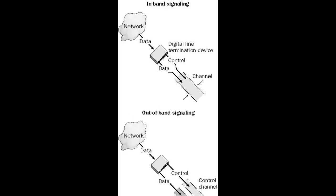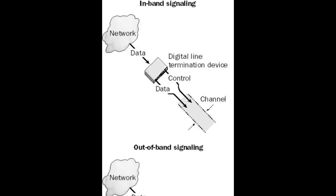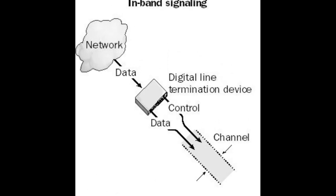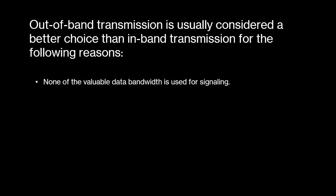The opposite of out-of-band is in-band, in which signaling information is sent over the same channel as the data transmission. Out-of-band transmission is usually considered a better choice than in-band transmission for the following reasons.